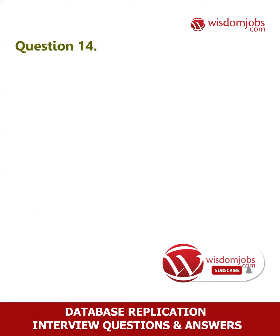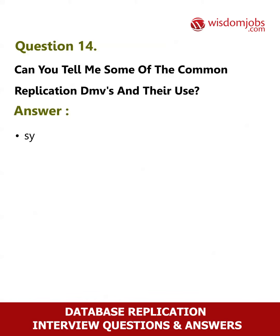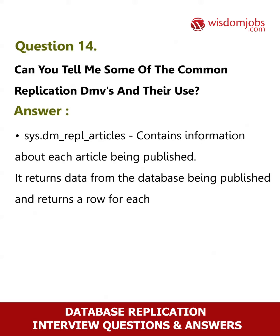Question 14. Can you tell me some of the common replication DMVs and their use? Answer. sys.dm_repl_articles: Contains information about each article being published. It returns data from the database being published and returns a row for each object being published in each article.